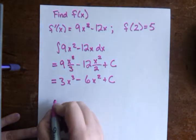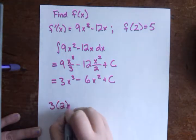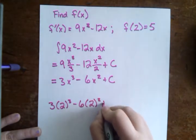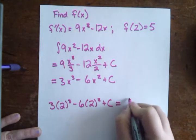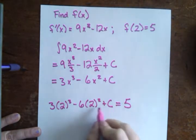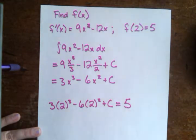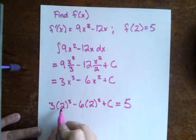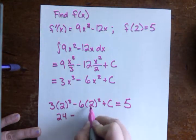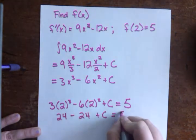So I want f of 2, so that's going to be 3 times 2 cubed minus 6 times 2 squared plus c, and they're telling us that that equals 5. And if we want to know what c is so that we can give them the exact answer that they're looking for, we just need to solve for c. Let's take a look at that. This is 3 times 8, that's 24. This is 6 times 4, that's 24, plus c equals 5.